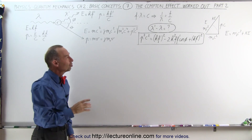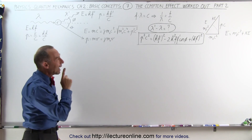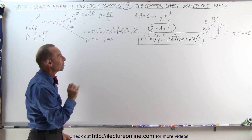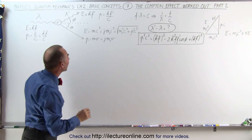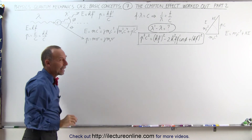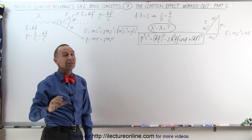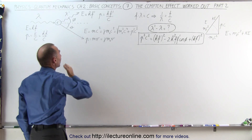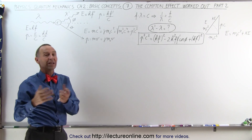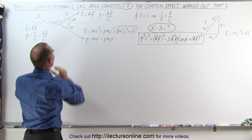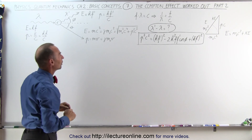We need another relationship to make that happen. That second relationship is the conservation of energy. What we can say is that the energy coming into the collision equals the energy coming out of the collision. At the quantum mechanic level, that is the case unless some other photon is generated. But since no second photon is generated, we can say that energy is also conserved in the equation.